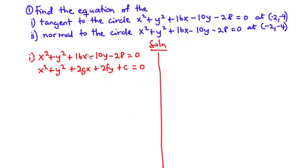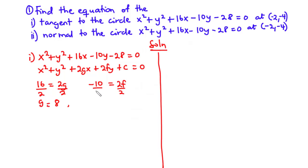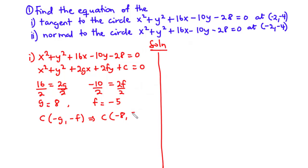Comparing coefficients of the x term: 16 = 2G, so G = 8. For the coefficient of y: −10 = 2F, so F = −5. The center is given by (−G, −F), so the center of the circle is (−8, 5). This is the coordinate of the center of the circle.